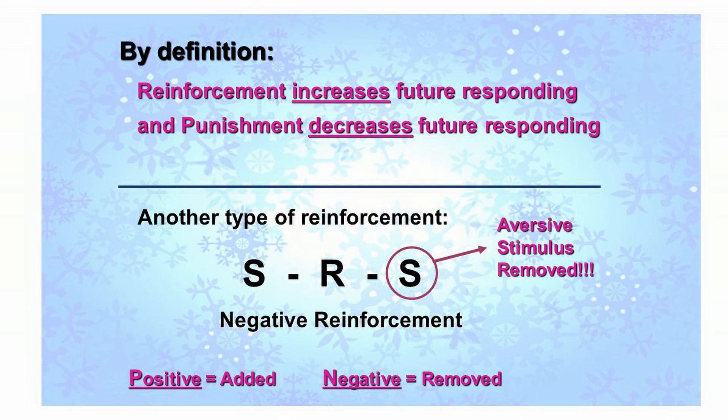By definition, reinforcement increases the future probability of a response, while punishment decreases the future probability of a response. There's another type of reinforcement where in the presence of a discriminative stimulus, a response occurs, but that response removes an aversive stimulus, and that increases the future probability of the response. So by definition, this is reinforcement, although the second S in the three-term contingency is something that is undesirable.